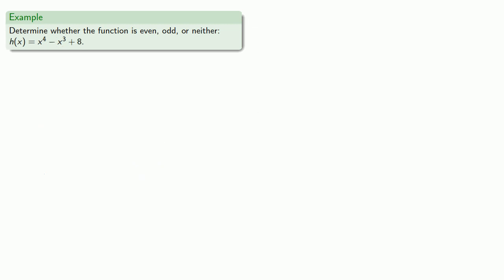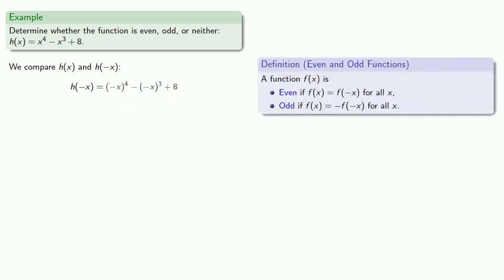Or a function like this. We'll compare h of x and h of negative x. Since h of x is not equal to h of negative x, and h of negative x is not equal to negative h of x, h is neither of these. And so h is neither even nor odd.